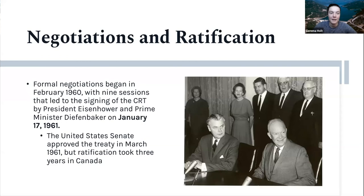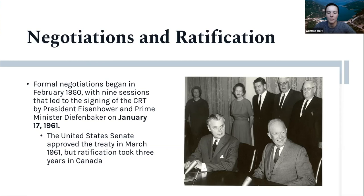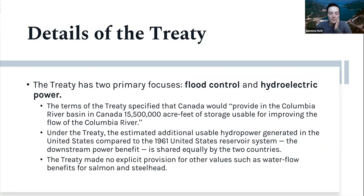Another round of formal negotiations began in February 1960, and ultimately the Columbia River Treaty was signed by President Eisenhower and Prime Minister Diefenbaker on January 17, 1961. The U.S. Senate approved it almost immediately, but ratification took an additional three years in Canada, largely due to British Columbia needing to negotiate with the Canadian federal government to clarify issues of authority and responsibility. That was the original round of negotiation processes.